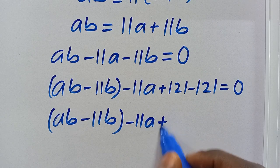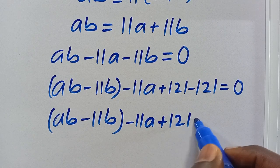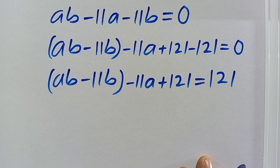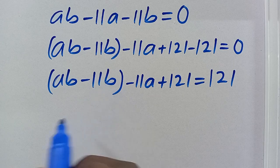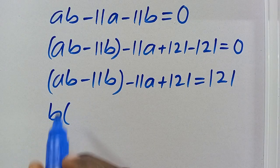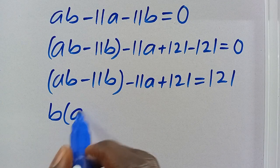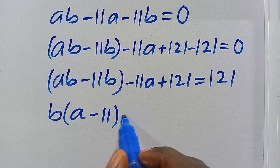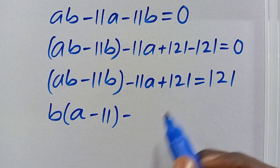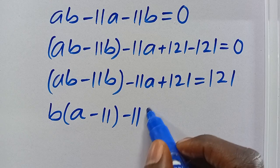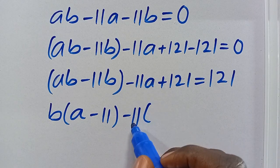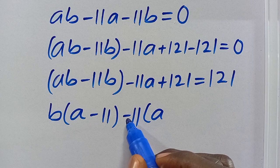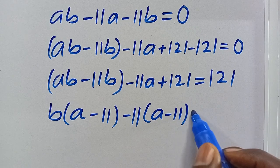From here, let's factor B from the first group: B times (A minus 11). Then from the second group, minus 11A plus 121, we factor out minus 11 to get minus 11 times (A minus 11). So we have B(A minus 11) minus 11(A minus 11) equals 121.